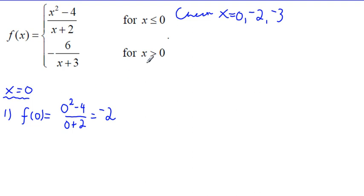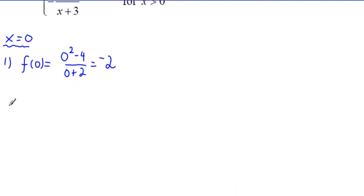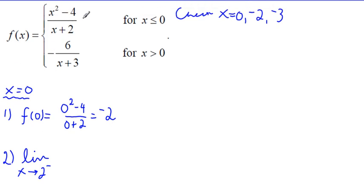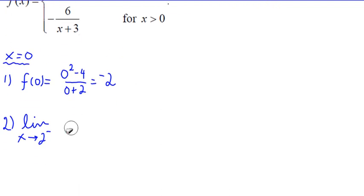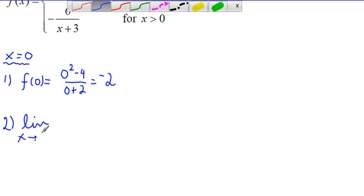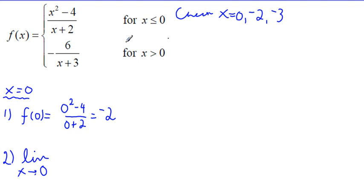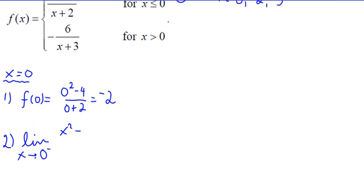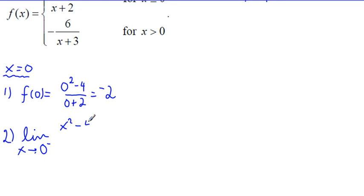Anytime you're checking a boundary point of a piecewise function, you have to check the one-sided limits. I need the limit as x approaches zero from the left side. For the left side, I use the piece for x less than zero: that's x squared minus four divided by x plus two. Plugging in zero gives negative four over two, which equals negative two. So the left-hand limit as x approaches zero is negative two.